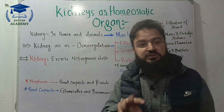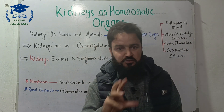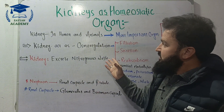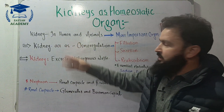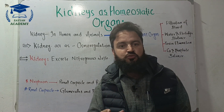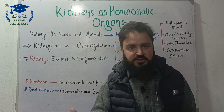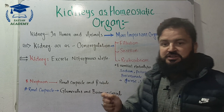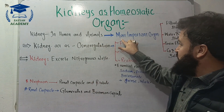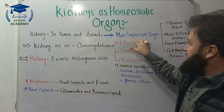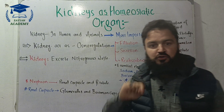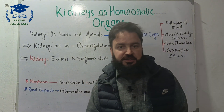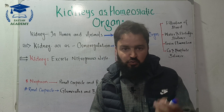The kidney was central to homeostasis. The kidney is considered one of the most important organs in the human body. The question is: what makes it the most important organ?